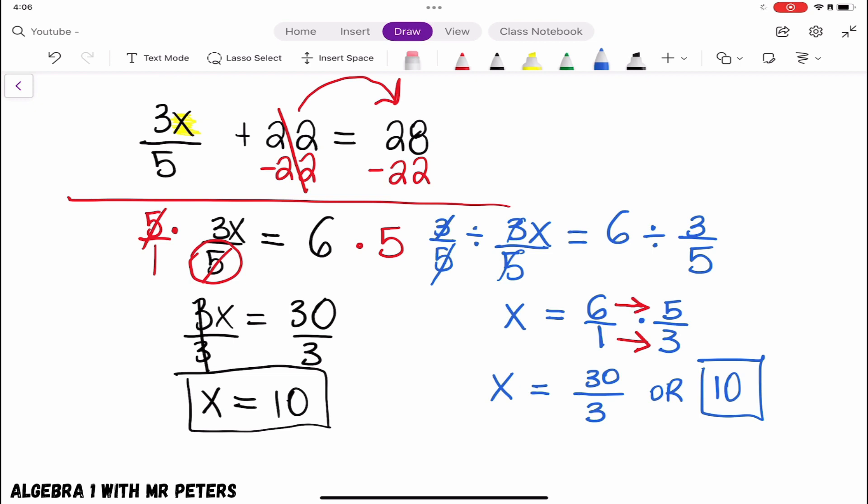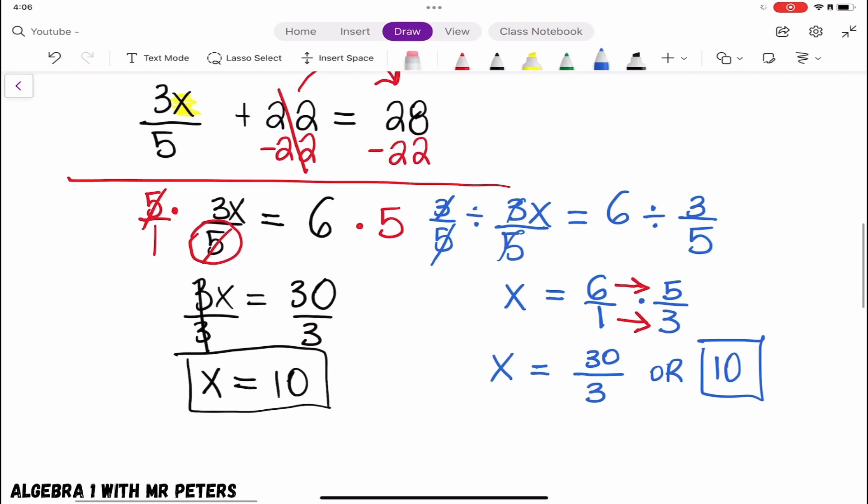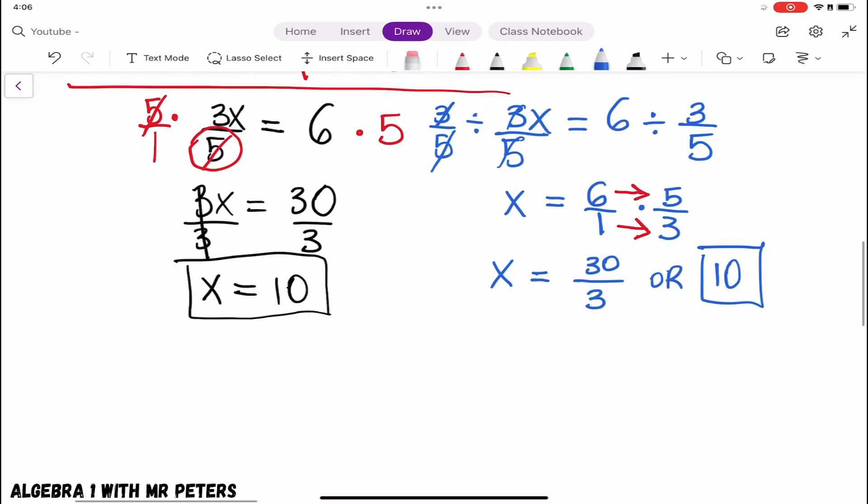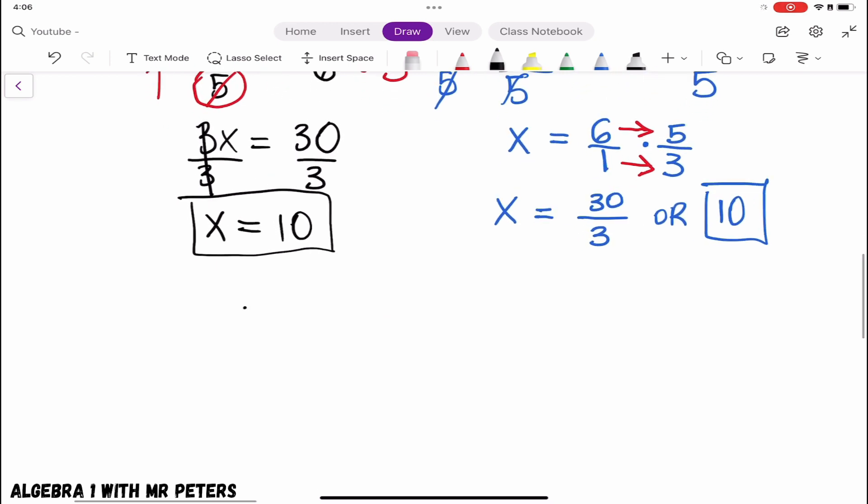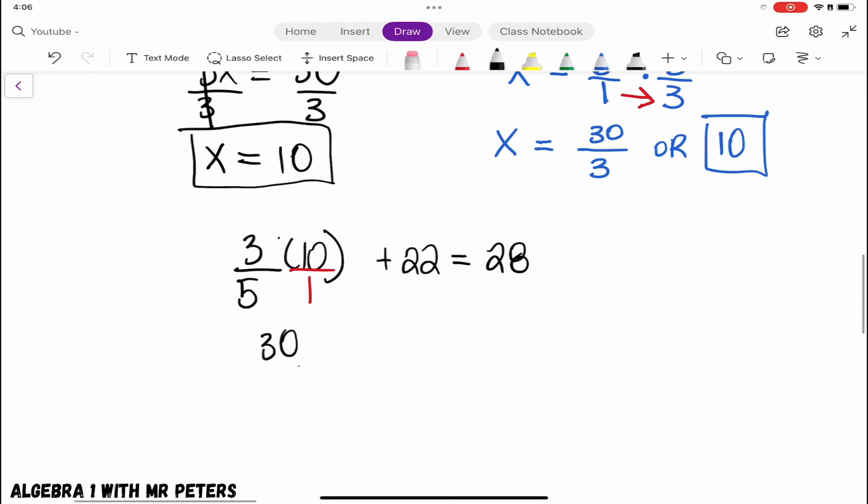So let's say, let's go back now and just double check this before we wrap it on up and get a little bit more space. So we have 3 over 5 times 10, that's what our x was. Plus 22 is equal to 28. So let's just say we put this 10 over 1. Multiply straight across. We'll have 30 over 5 plus 22 is equal to 28.